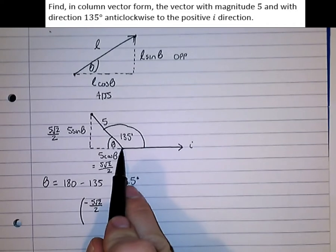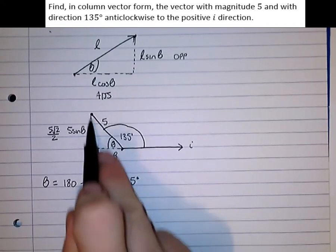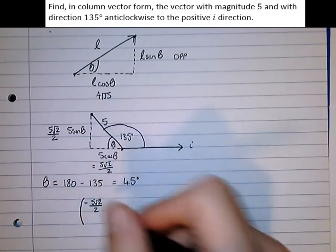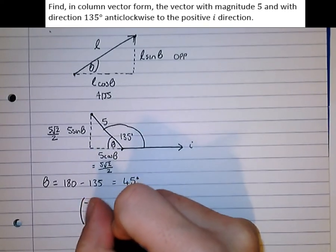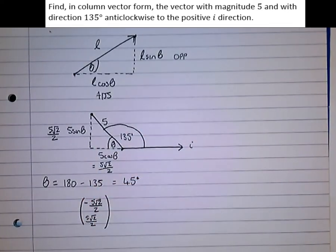Remember, in vectors, direction's important. And in the positive j direction, we move 5 root 2 over 2 as well. 5 root 2 over 2. And there's our vector.